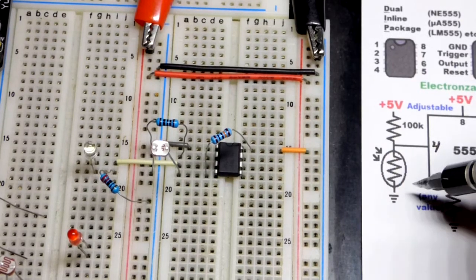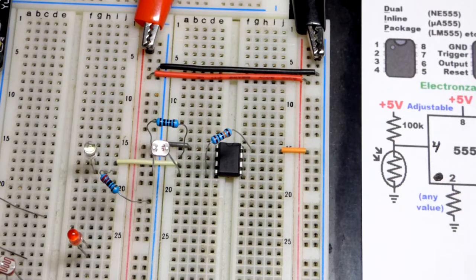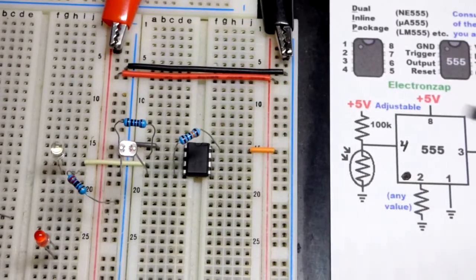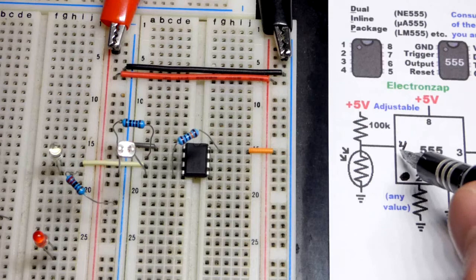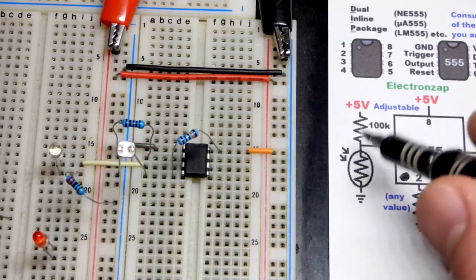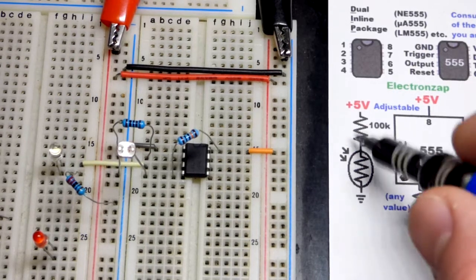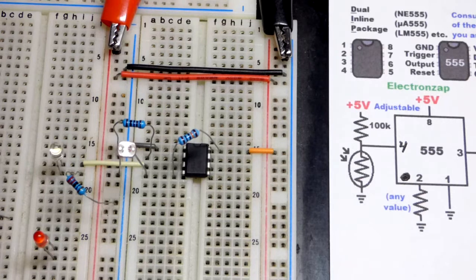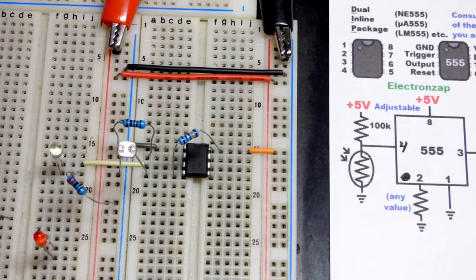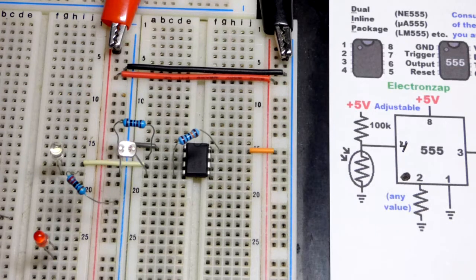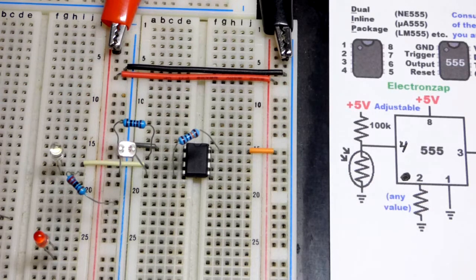So when it comes to the reset input for the 555, I don't know that there's a fixed voltage that it responds to. I think it may be variable. And so just experiment with different value fixed resistors till you get the result that you want. So in any case, if you weren't terribly familiar with the 555, hopefully this helped and hope you enjoyed the video.